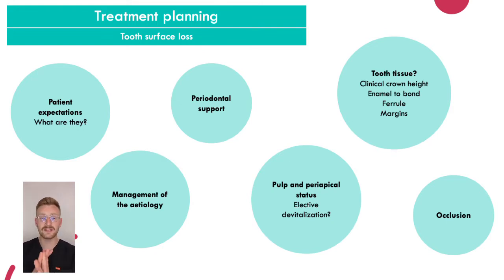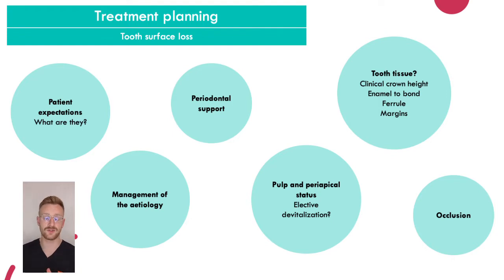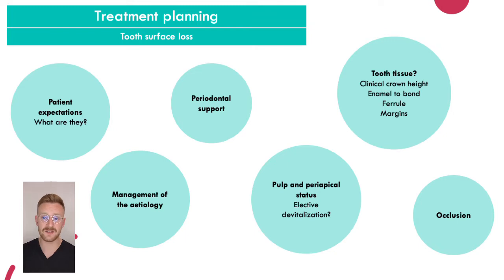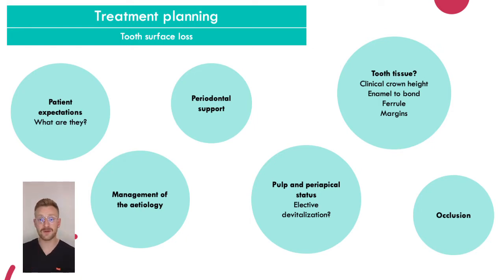Before you get stuck into the rebuild, you need to manage the etiology. If you know the etiology and don't address it, your restorative work will fail — things will deteriorate and more wear will occur. For example, if a patient is a heavy bruxist and you give them porcelain veneers without addressing the bruxism, they'll just knock them off at night. It's the same principle as managing caries — you don't just restore the teeth, you address why the caries is there in the first place.